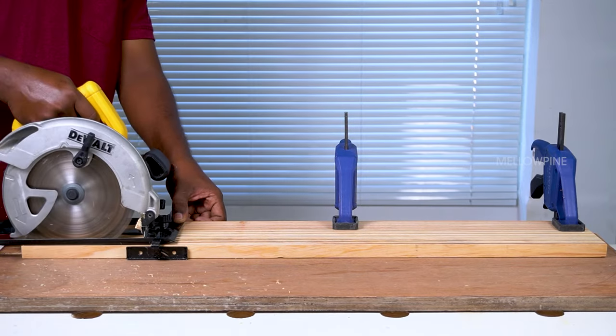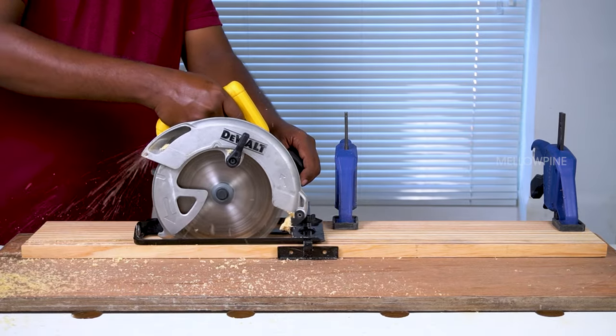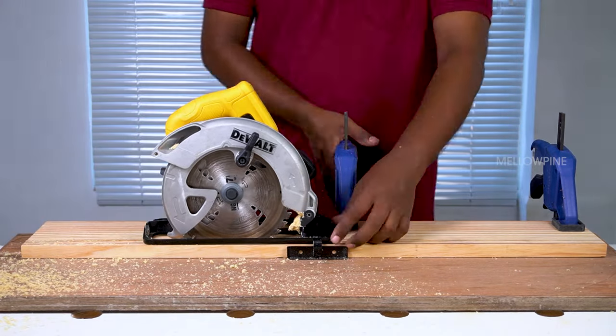Turn on the saw and make the cut along the ripping line marked earlier. If you don't have a rip fence, use a straight edge instead.